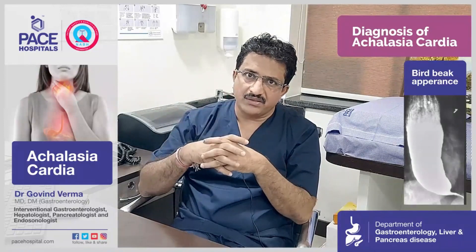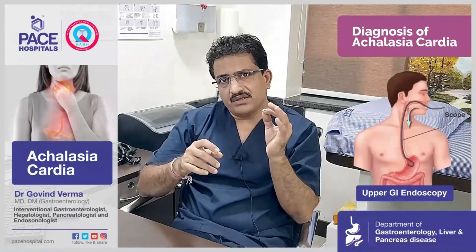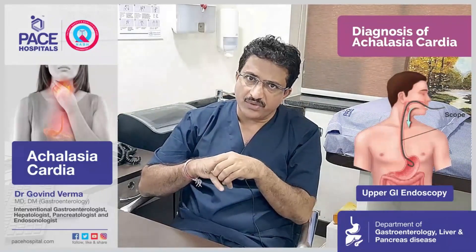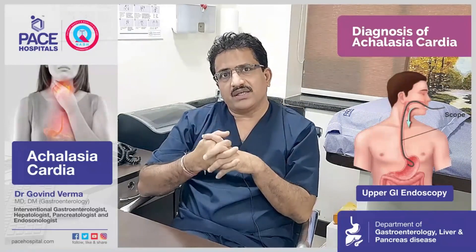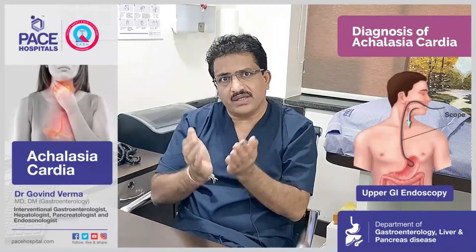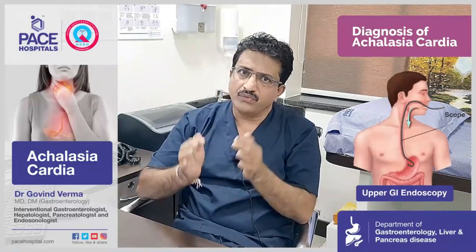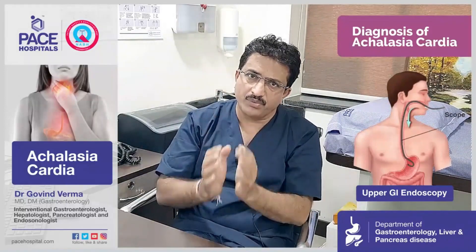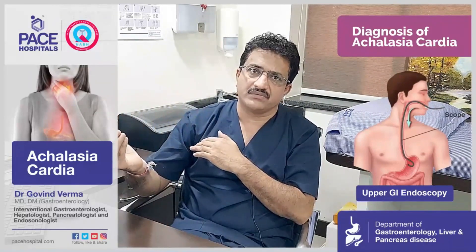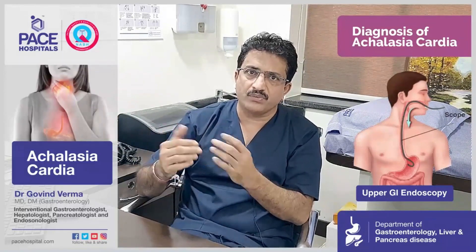The third investigation is an endoscopy. By doing an endoscopy we can determine whether there is resistance at the lower esophageal sphincter, observe peristalsis, and identify esophagitis — inflammation at the lower end of the esophagus caused by retained food. Because the lower esophageal sphincter fails to relax, food remains in the distal esophagus, becomes infected, and causes esophagitis, which can ultimately lead to esophageal cancer. It is therefore very important that we diagnose this condition as early as possible to prevent further complications.